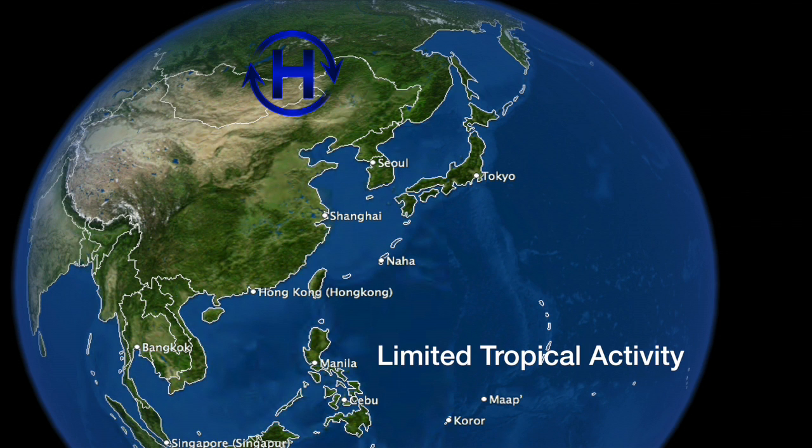If you do see tropical systems form in the winter months or during the height of the northeast monsoon, they often stay farther down towards the south into parts of Mindanao or southern Visayas, out of the grasp of the monsoonal winds which would tear it apart due to high vertical wind shear.